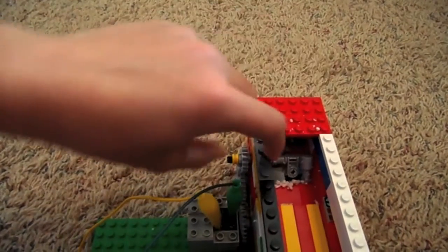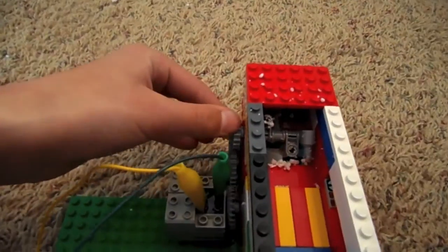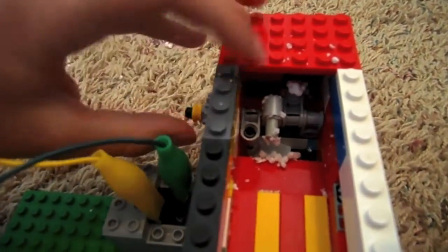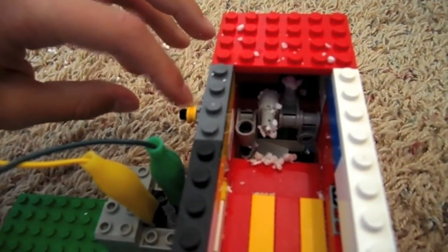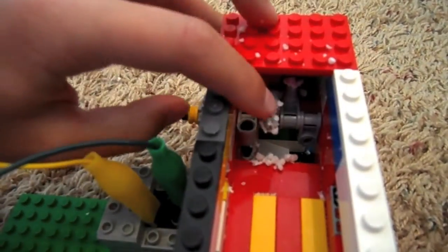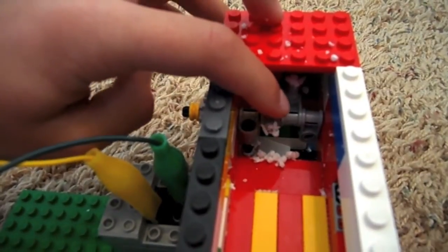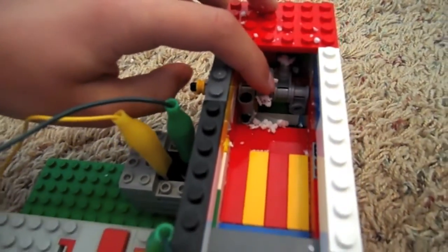And here is what chomps up the Styrofoam. So just four of these pieces on this 1x8 rod, and I just put these at the end, and it chops the Styrofoam better.